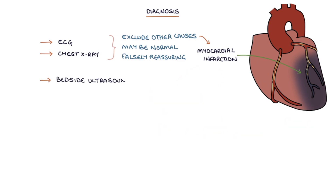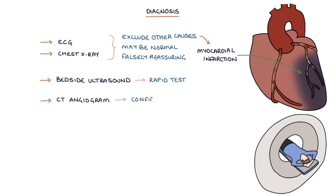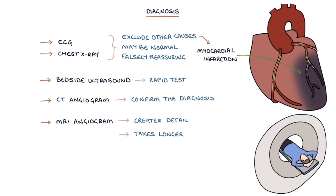A bedside ultrasound scan can be used as a rapid test in A&E to look for aortic dissection. A CT angiogram is usually the initial investigation to confirm the diagnosis and can generally be performed very quickly. An MRI angiogram provides greater detail and can help with planning management, but it often takes longer to obtain than a CT scan.